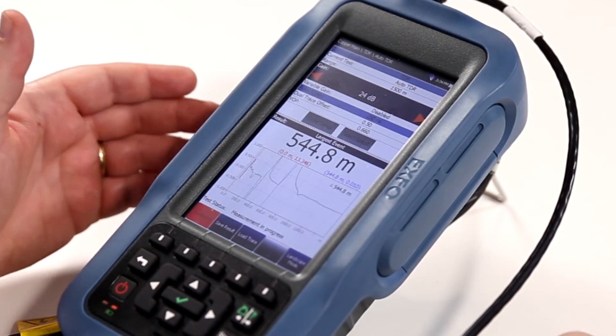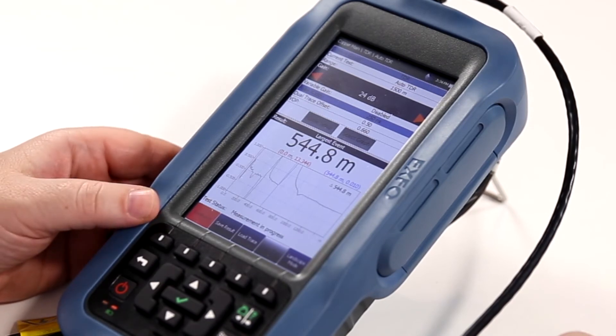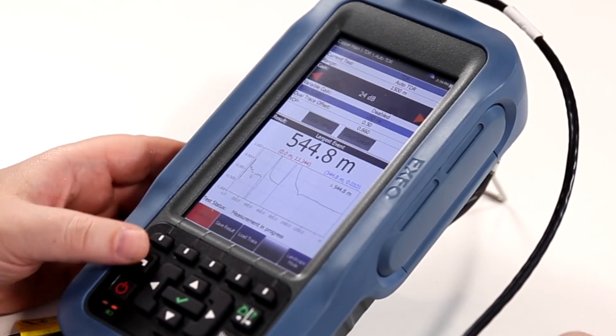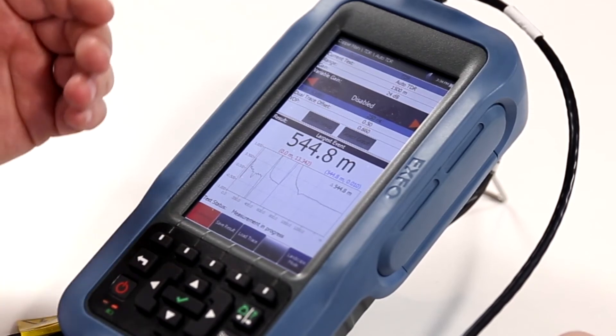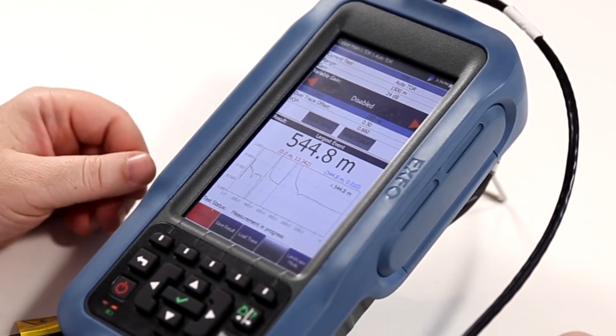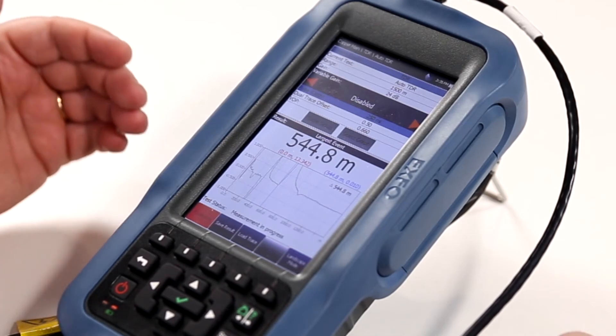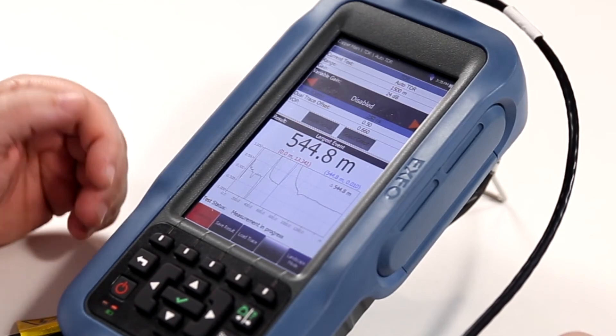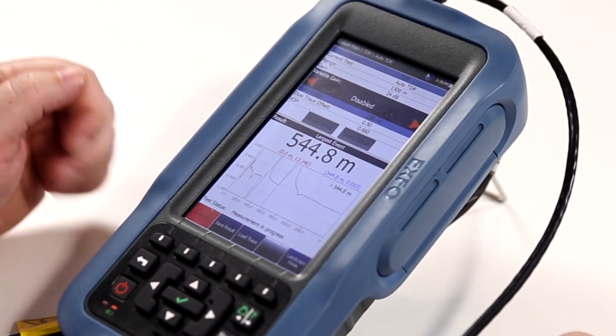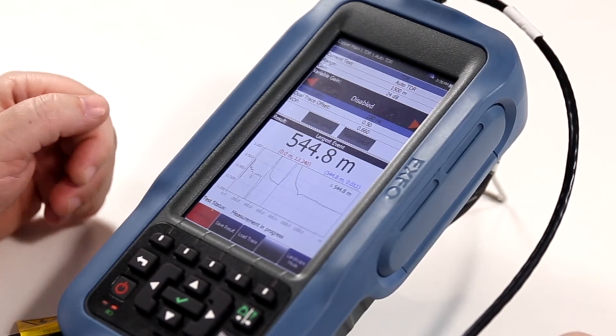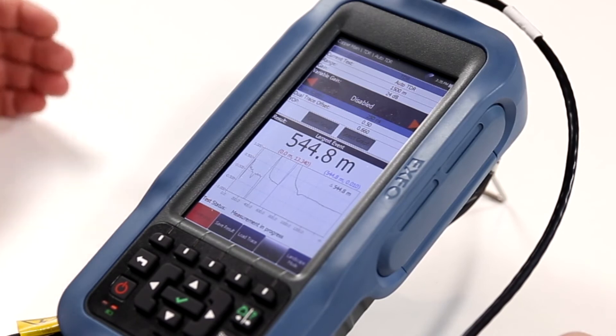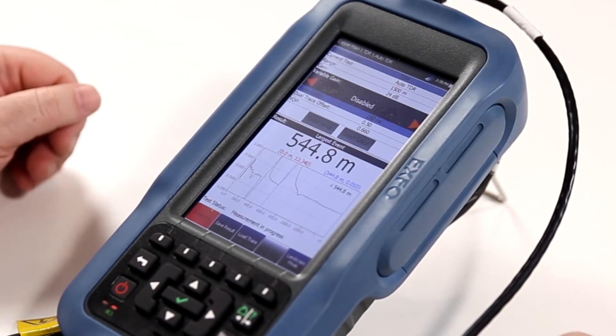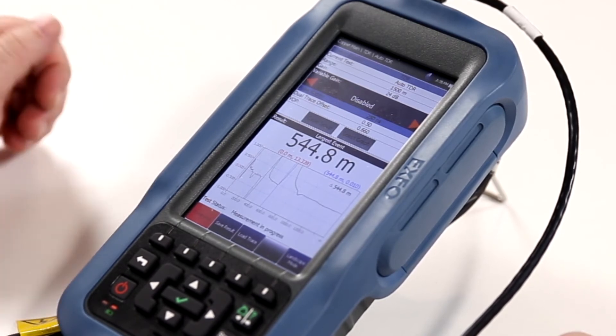In situations where there is a question on if there is an event near to the MACS tester, you would be able to enable the variable gain. What this will do is it will smooth the reflections that happen to appear at the near end of the circuit, so it clears it up greatly.